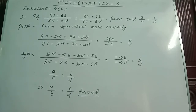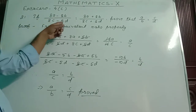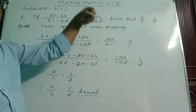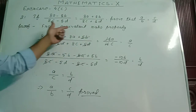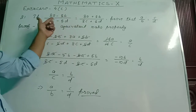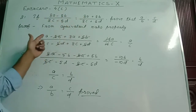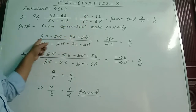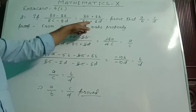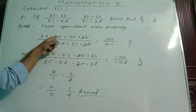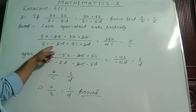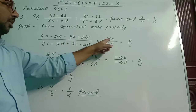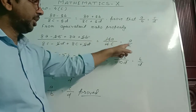In question number 21, if 8a minus 5b by 8c minus 5d equals 8a plus 5b by 8c plus 5d, then prove that a by b equals c by d. From equivalency property, I have added the numerators and denominators. I got 8a minus 5b plus 8a plus 5b by 8c minus 5d plus 8c plus 5d. So minus 5b plus 5b cancelled, and minus 5d plus 5d cancelled. We are getting 16a by 16c, and 16 and 16 cancel, giving a by c.